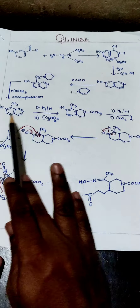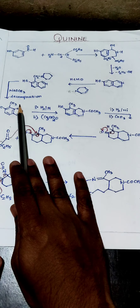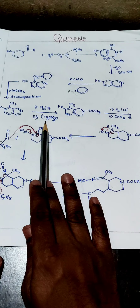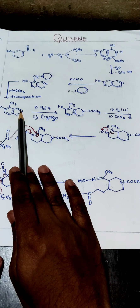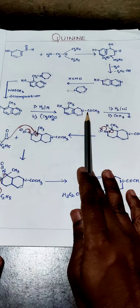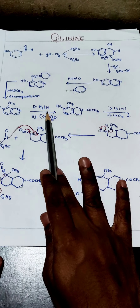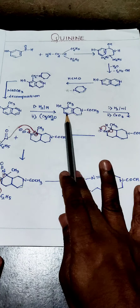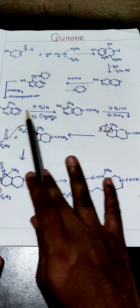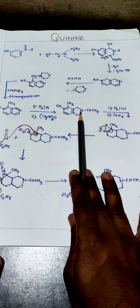Further, from this step to this step it is a reduction step — reduction of this ring in the presence of H2/Pt. I am also doing acetylation to the nitrogen. So two steps are here: first step is reduction, followed by acetylation. The only change is addition of COCH3 to the nitrogen.